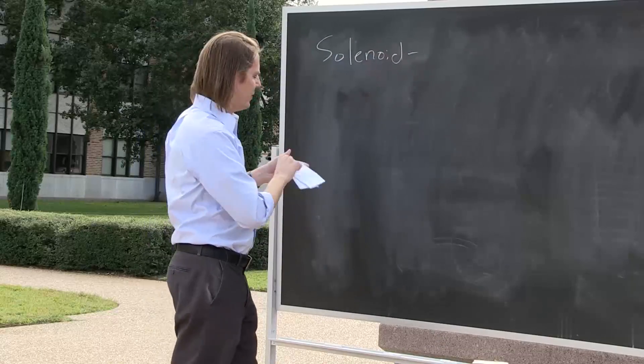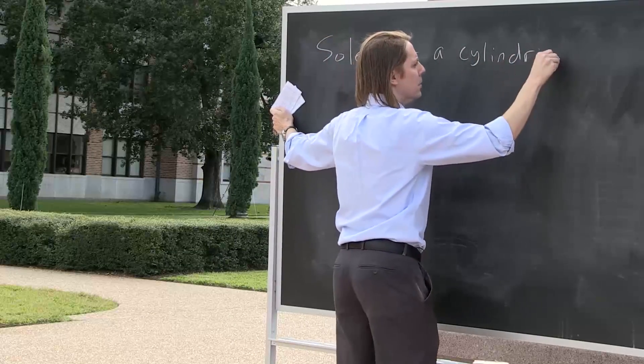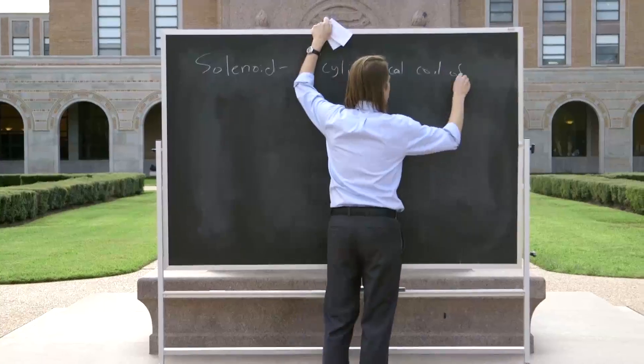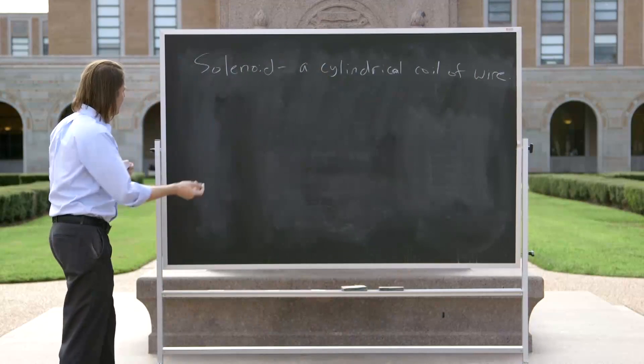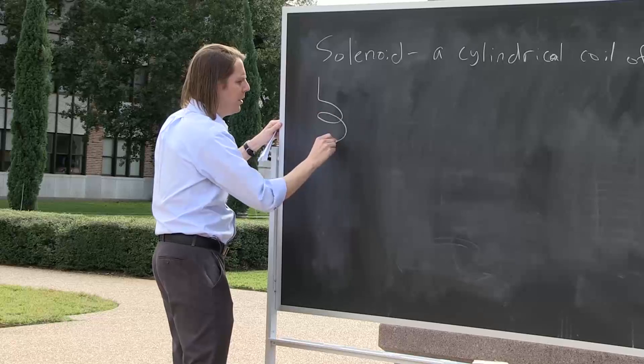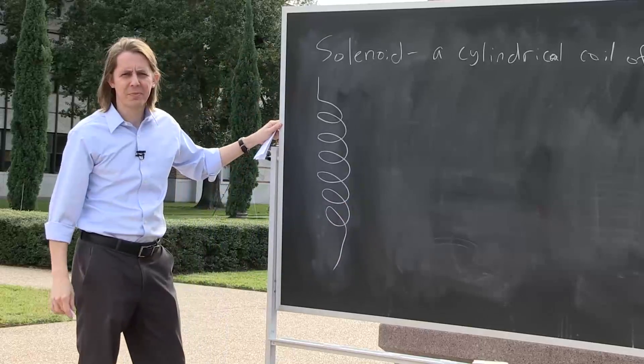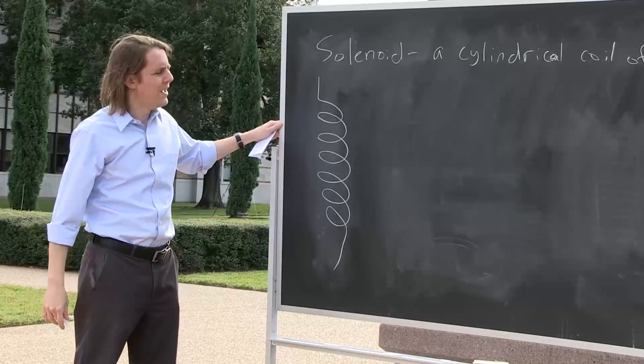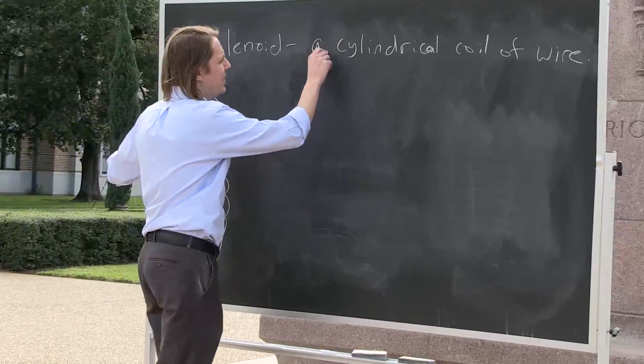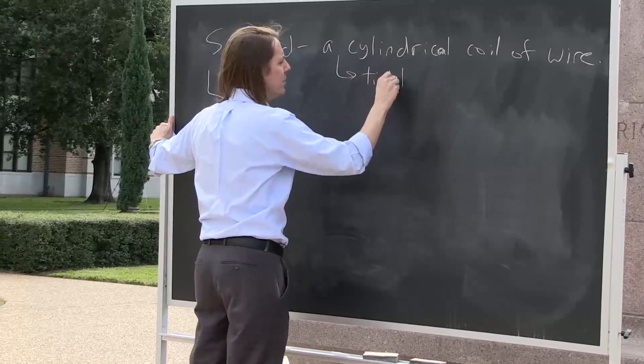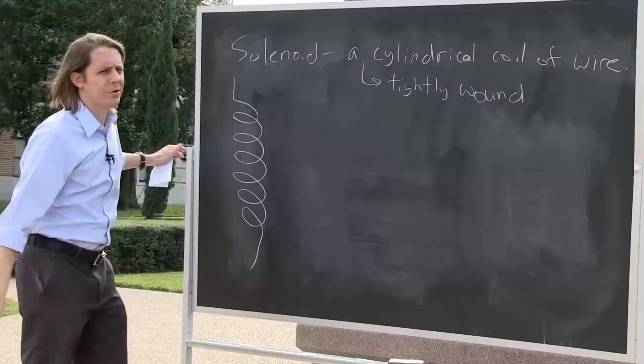So a solenoid is a cylindrical coil of wire. If I were to draw a solenoid, it just looks like this. Here's some wire, and it loops around, making kind of a helix. And if you want to make a field, you just send a current through it. Now, a real solenoid that you might use to create a magnetic field is actually one more thing we should add.